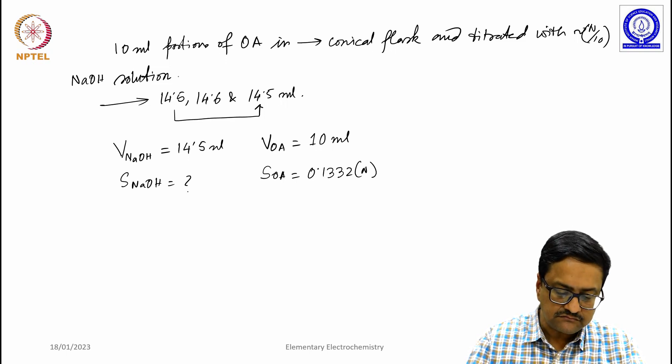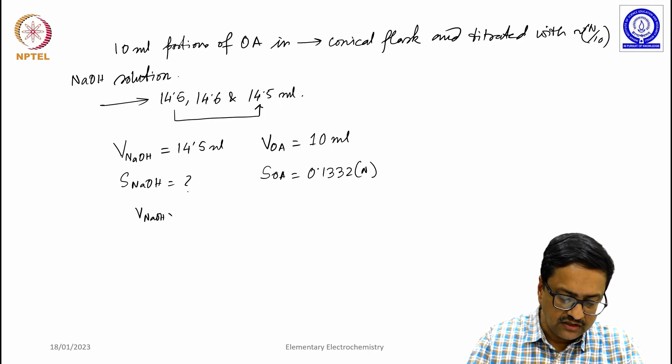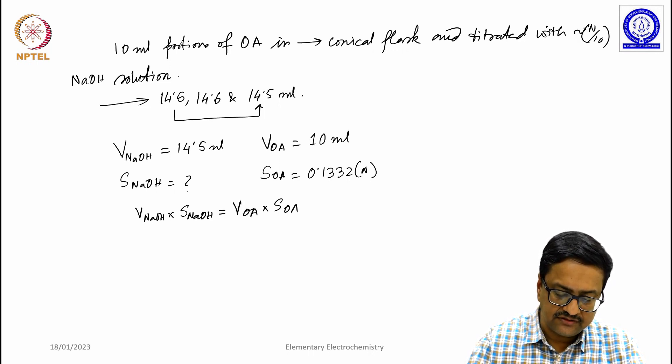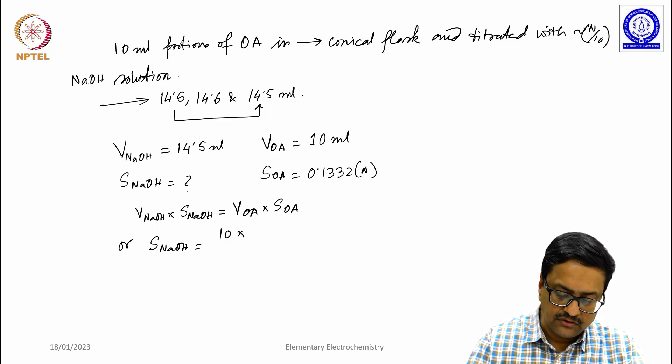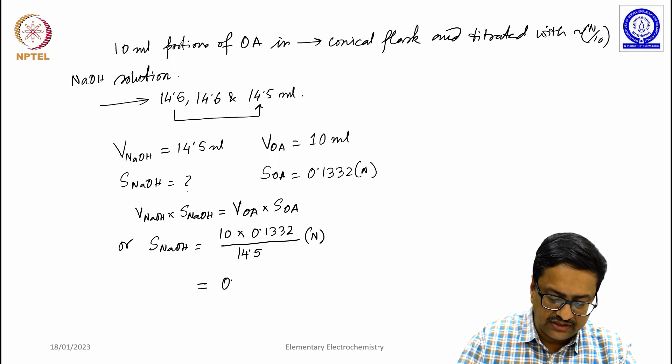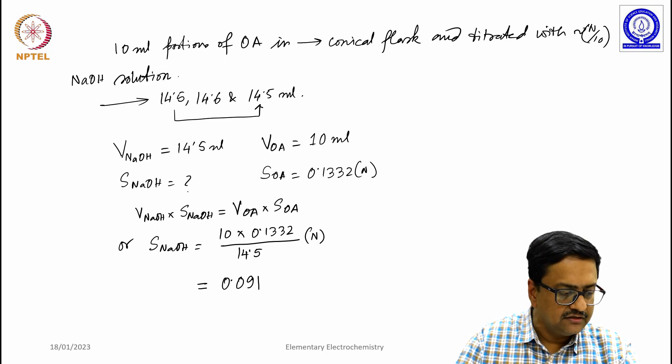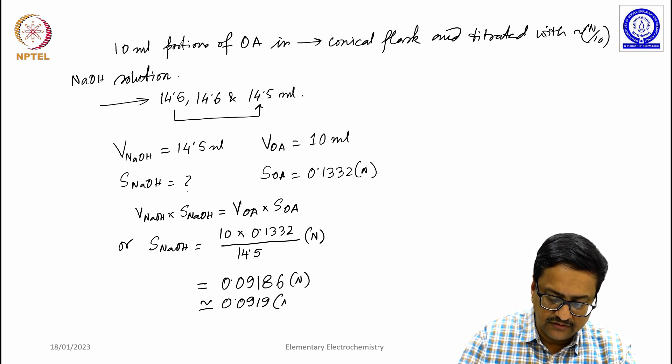So then you can calculate using V NaOH into S NaOH equal to V oxalic acid into S oxalic acid, or S NaOH equal to 10 into 0.1332 divided by 14.5. Strength is in normality. So this number turns out to be 0.0918 or 0.186 normal, which you can make it approximate to 0.0919 normal,